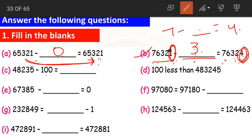Question C: 48,235 minus 100 equals dash. Again, in 100 the digit 1 is in the hundreds place and the remaining digits are zeros. So the change comes only in the hundreds place digit. 2 minus 1 is 1, and the remaining digits stay as they are: 4, 8, 1, 3, 5. So 48,235 minus 100 equals 48,135.